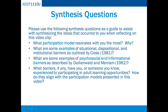Please reflect on the following synthesis questions: What participation model resonates with you the most and why? What are some examples of situational, dispositional, and institutional barriers as outlined by Cross? What are some examples of psychosocial and informational barriers as described by Darkenwald and Merriam? And what barriers, if any, have you or someone you know experienced in participating in adult learning opportunities, and how do they align with the participation models presented in this video?